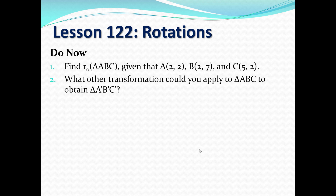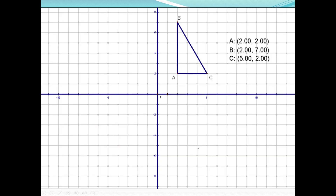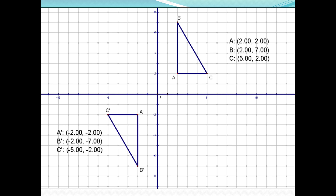Let's graph this first. Let's plot the points A, B, and C. There we have this triangle with the respective points A, B, and C. According to the do-now, we want to reflect this over the origin to obtain the image. So we have A prime is (-2,-2), B prime is (-2,-7), and C prime is (-5,-2).